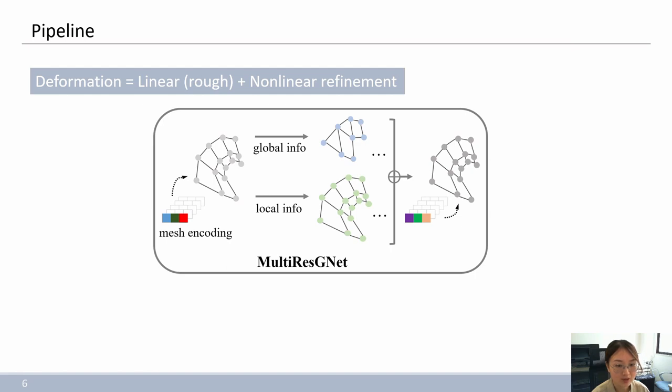The network contains two branches for respectively handling global and local information. We use various characters with different customizations in random poses for training and make the network possible for building intricate relations. The trained network directly outputs the corrective displacement per-vertex for the final nonlinear deformations.